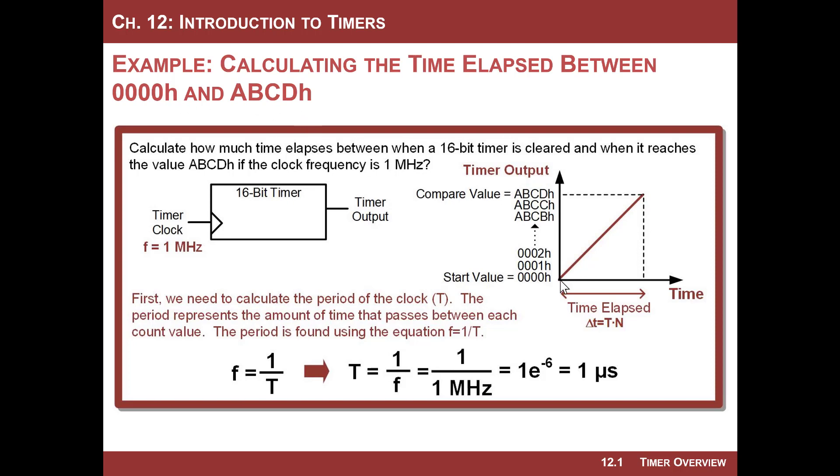And so this is kind of the plot that you would see. This little plot right here, let's have time on the x-axis, and then on the y-axis, we'll put the actual count. And what will happen is that you basically get this straight line that goes up. And so what we want to know is how much time elapses between 0000h and ABCDh, and that will be this right here.